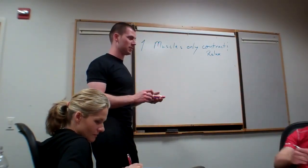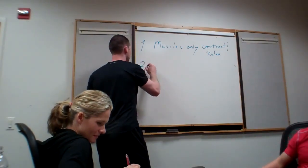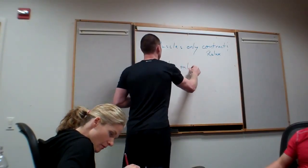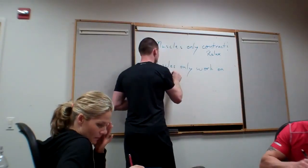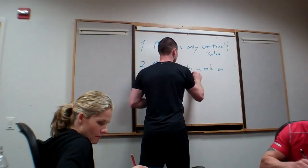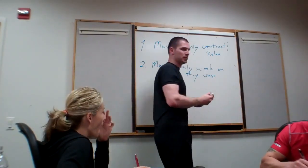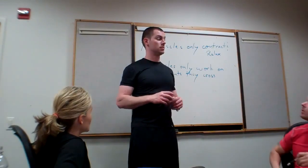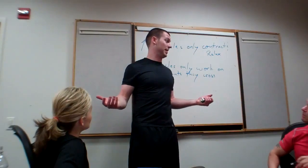You guys ready for rule number two? As you can tell, these are getting terribly complicated. Rule two: muscles only work on joints they cross. My deltoid crosses what joint? Shoulder. So we'd expect it to move my shoulder. That makes sense.